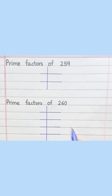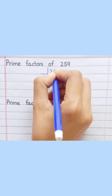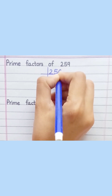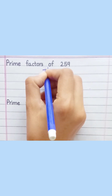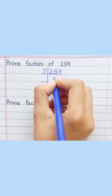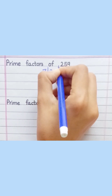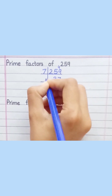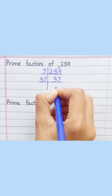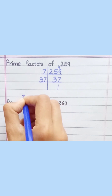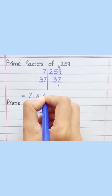Prime factors of 259. 7 threes are 21. 7 sevens are 49. 37 ones are 37. Equal 7 multiply 37.